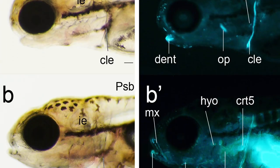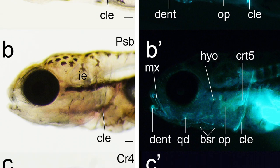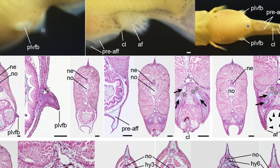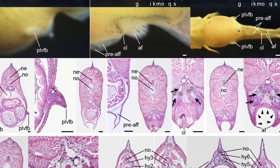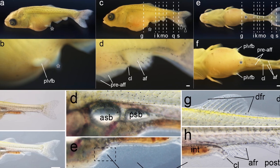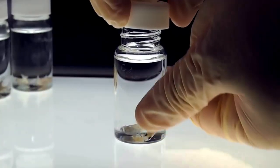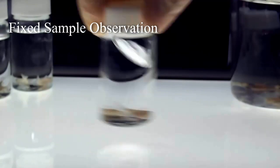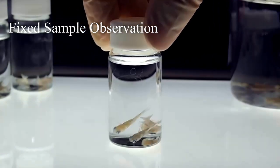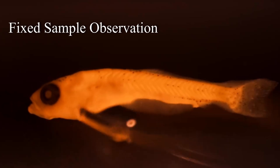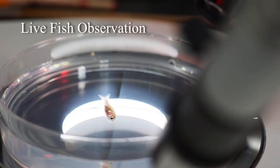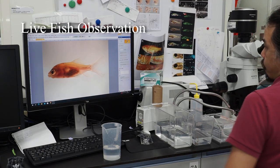So, how can we observe the sequence in which these organs appear? In this video, we will explain observation methods based on our previous research. There are two main observation methods: one method involves anesthetizing the fish, fixing them with a fixative to preserve them in a lifelike state, and then carefully observing them later. The other method involves photographing the live fish and keeping records.